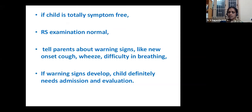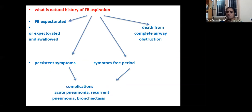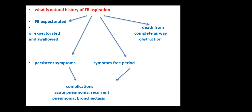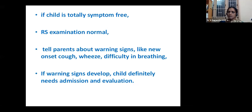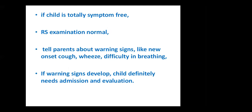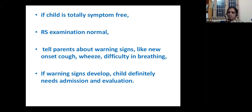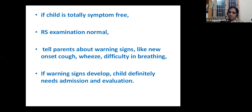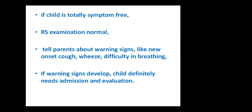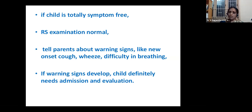Foreign body aspiration can present in five ways: the child coughs it out and expectorates; the child coughs and swallows it; the child dies from complete airway obstruction; the child is brought with symptoms; or the child has no symptoms at all. In the rare asymptomatic case with normal respiratory examination, send the child home but counsel parents about warning signs: new onset cough, wheeze, or difficulty breathing.